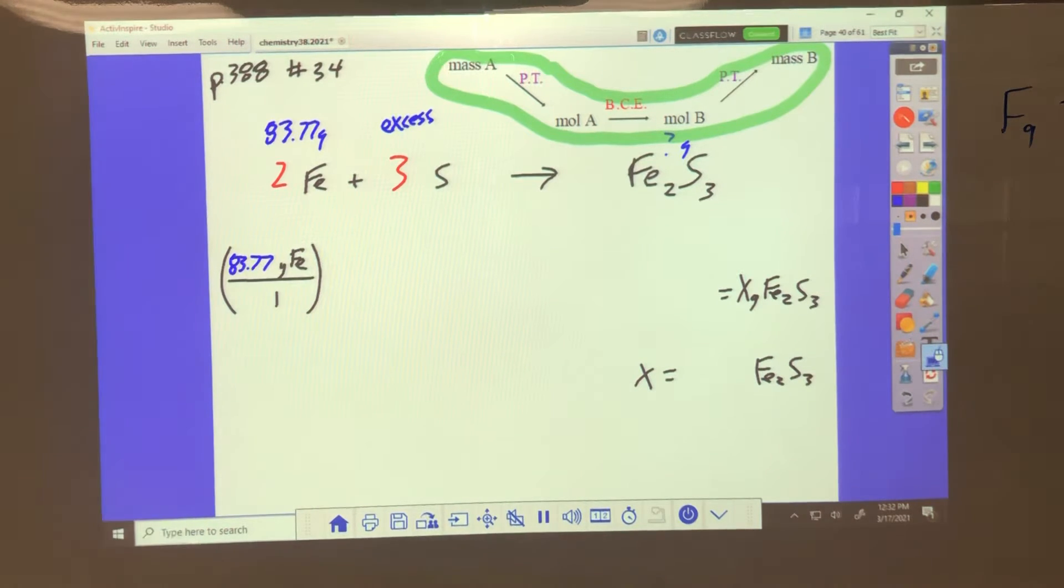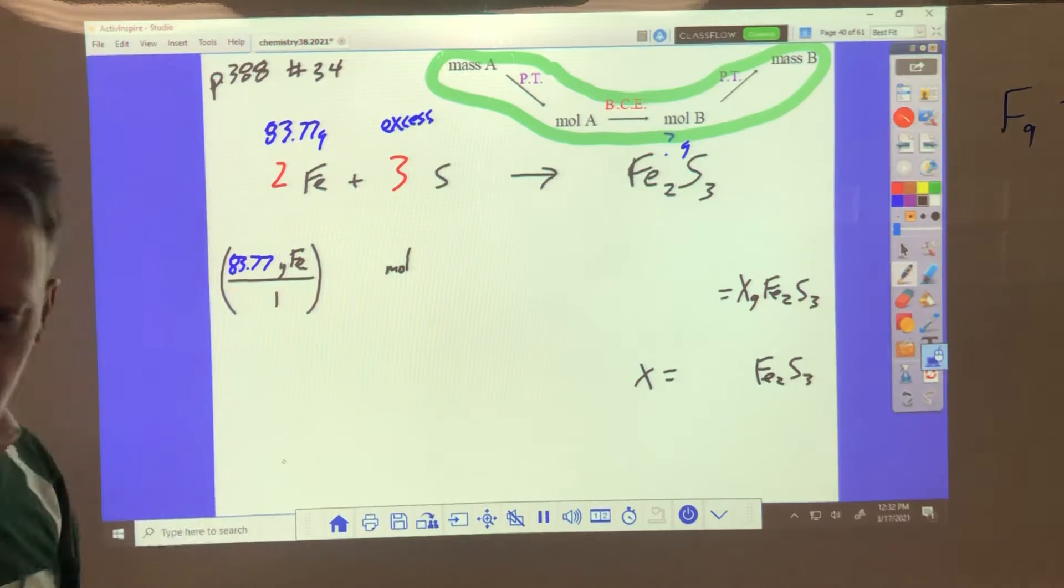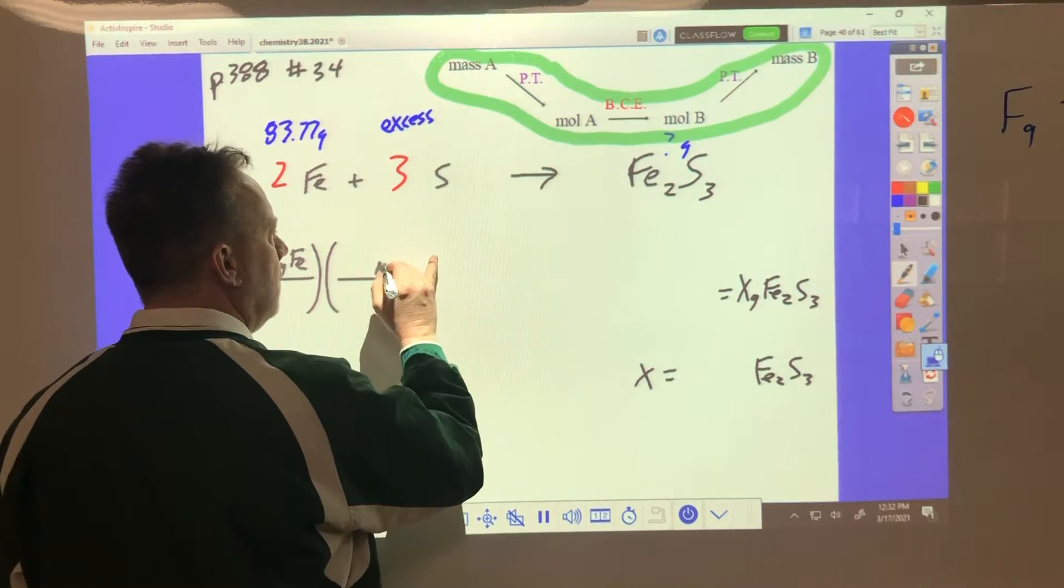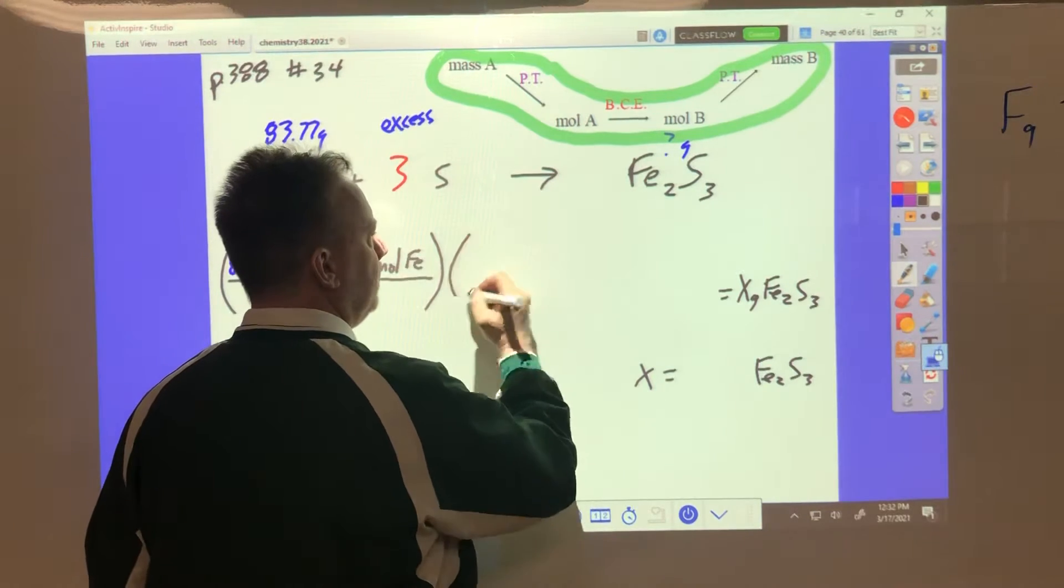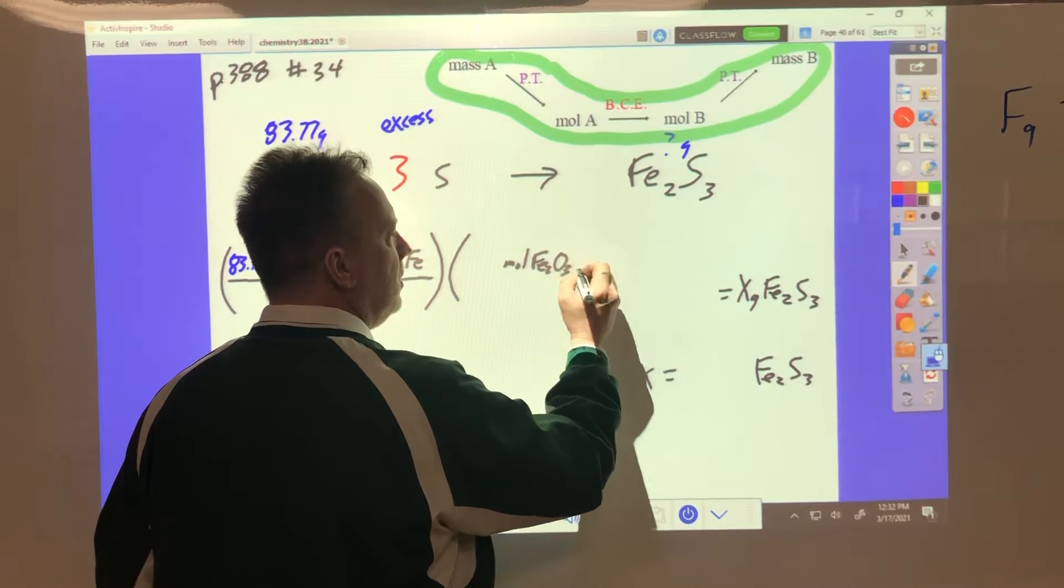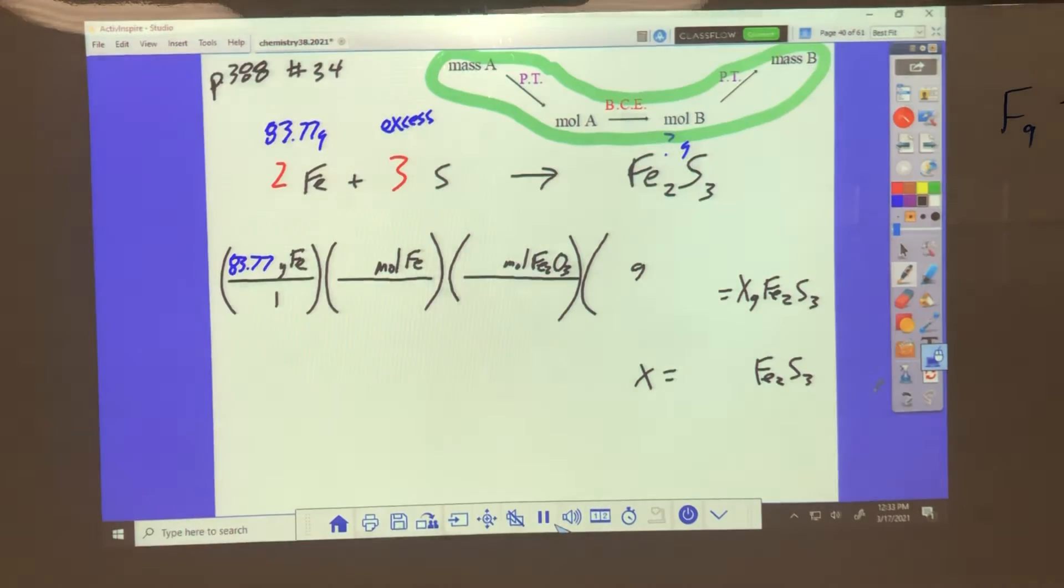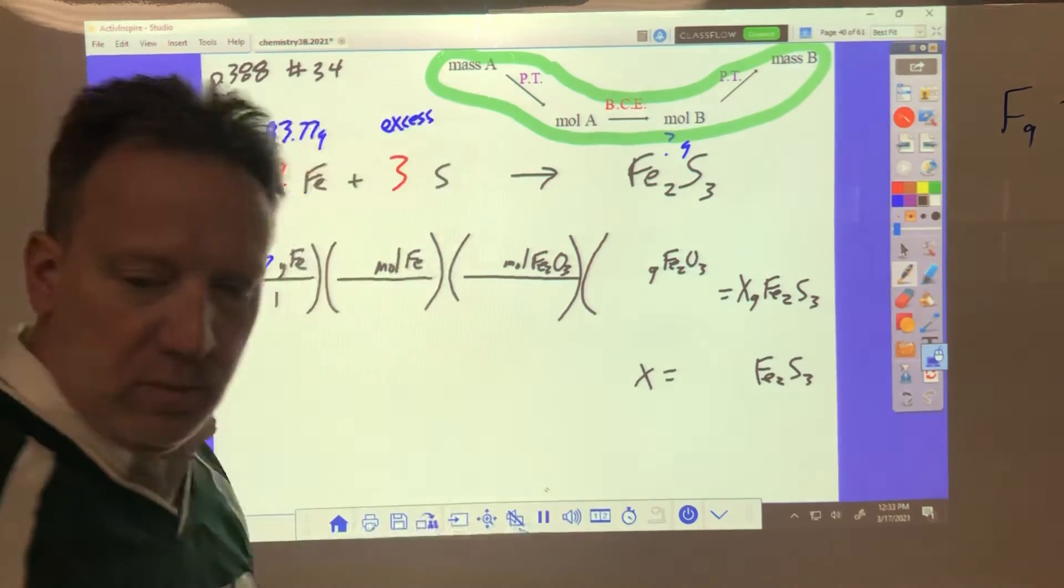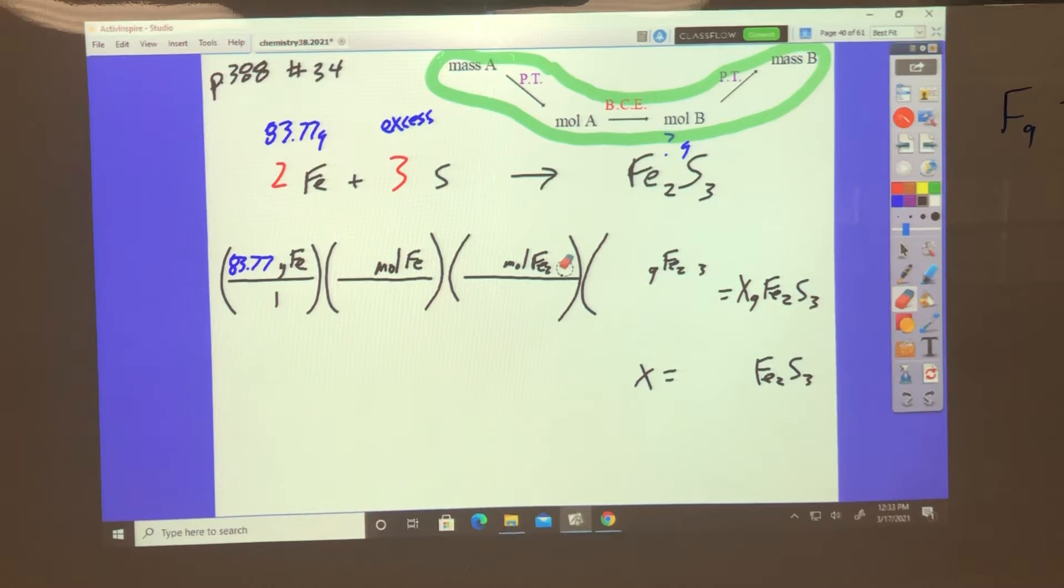Then we have to convert it. Iron Fe is playing the role of A, and then we're going to go to moles A, moles iron. Then we can go to moles of B, Fe2S3 is playing the role of B, moles Fe2S3, and then we're going to grams. Let me get myself a little bit more room there. Grams Fe2S3. I'm used to writing Fe2O3 because that's garden variety rust.